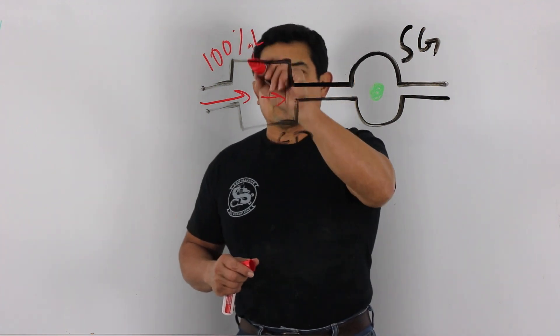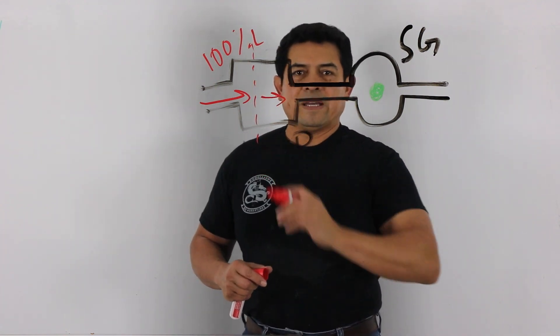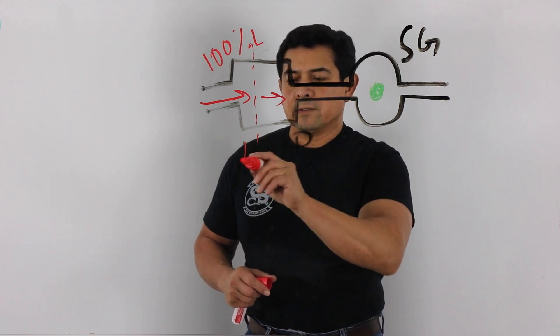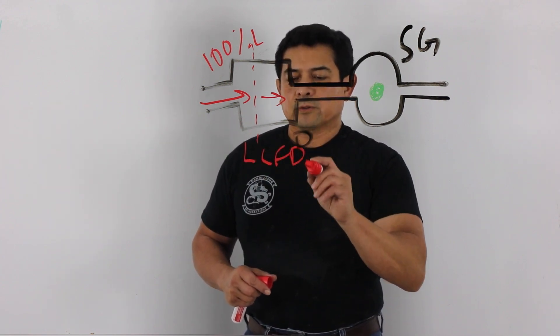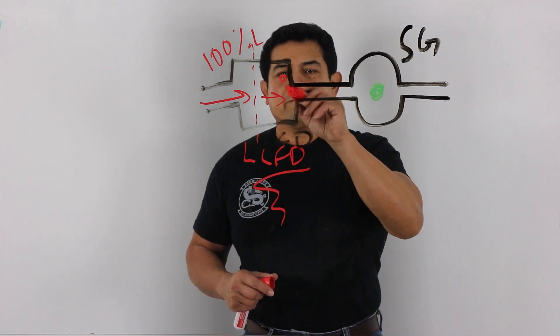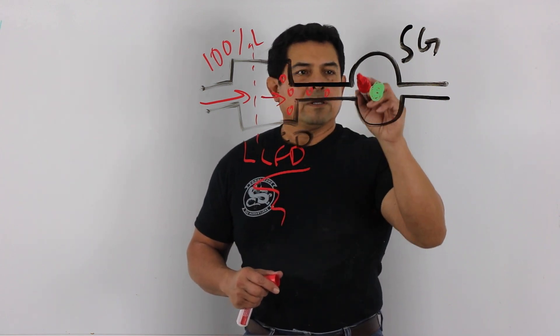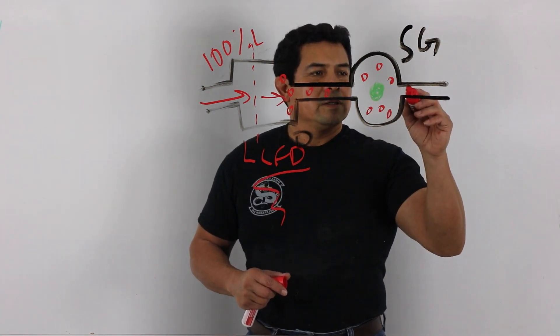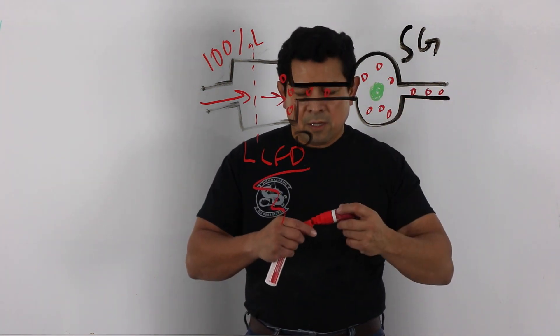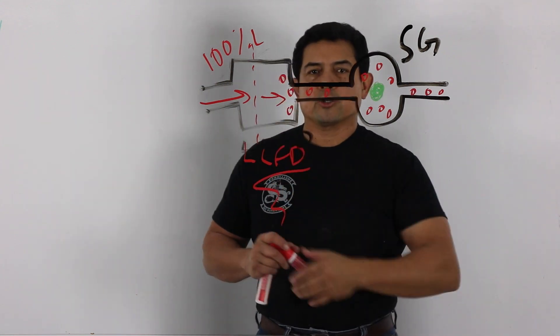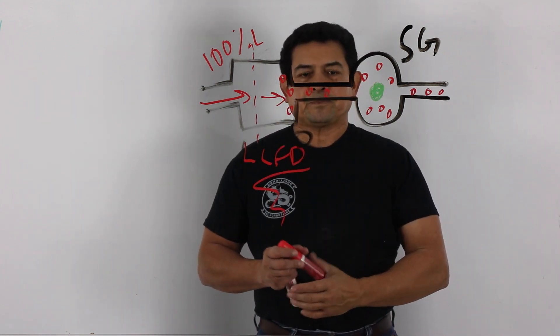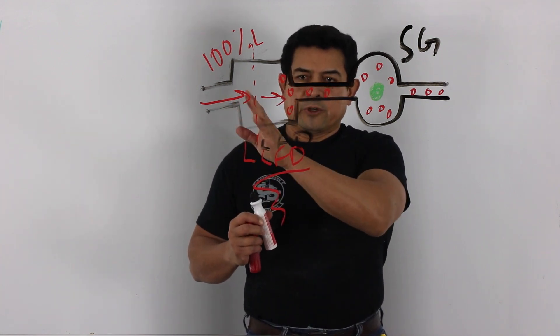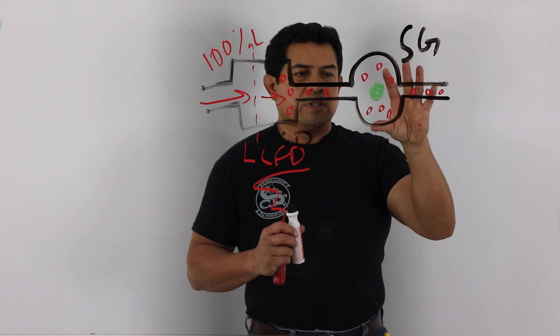Sometimes if the dryer is bad, if the dryer is getting clogged up, this liquid line filter dryer, if this is getting clogged up, then you're going to have flash gas here. You're going to see bubbles in the sight glass. They're going to be traveling through here because you're creating a restriction here. You have a pressure drop right there. So what happens is the refrigerant flashes off, you see bubbles here.